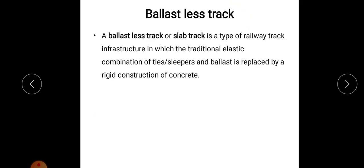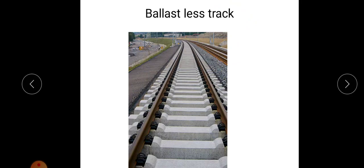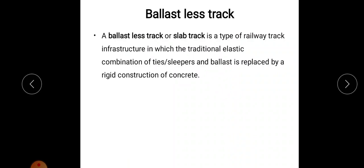Next is ballastless track. This is the example of ballastless track. So in this figure you can see there is no ballast. Ballast is not provided here. It is concrete structure. So ballastless track or slab track is a type of railway track infrastructure in which the traditional elastic combination of ties or sleepers and ballast is replaced by a rigid construction of concrete.